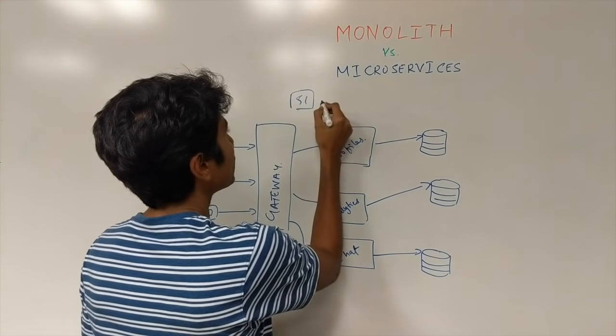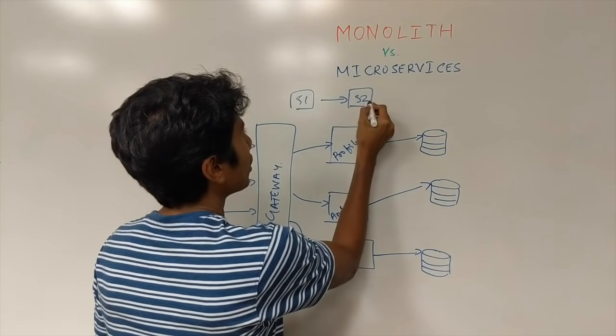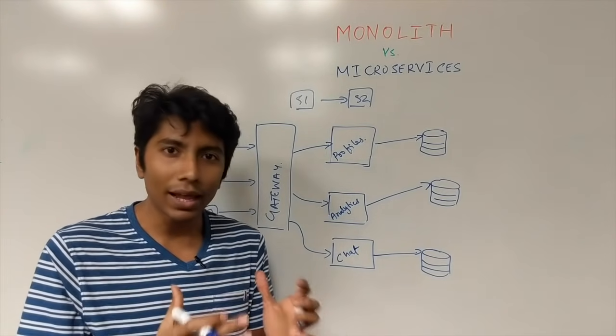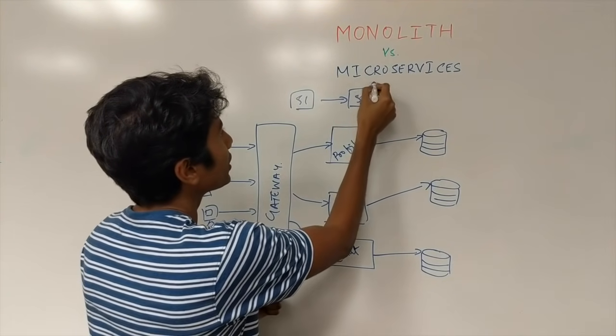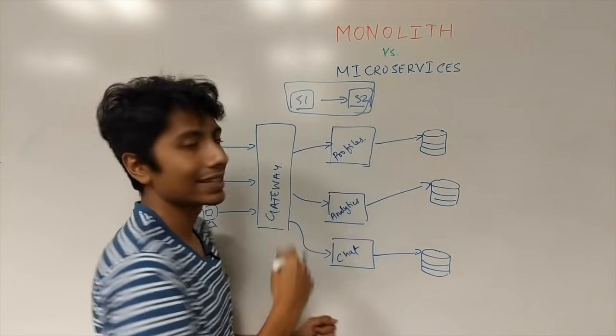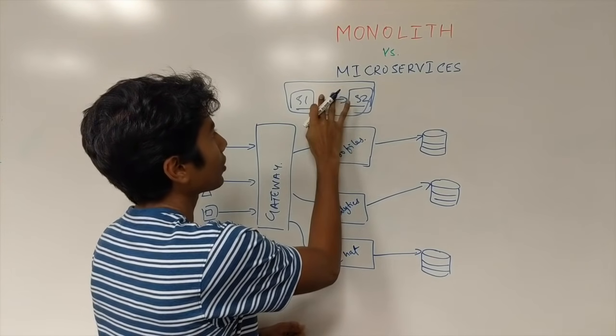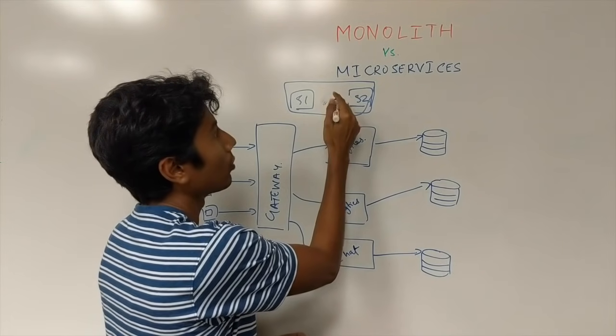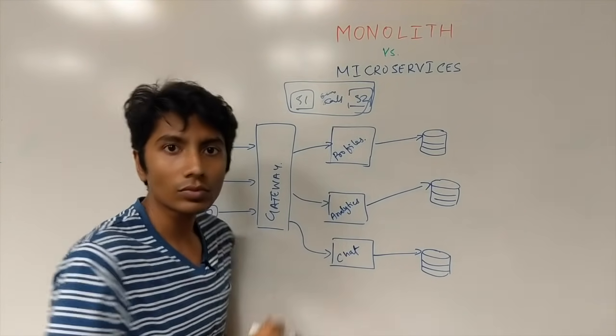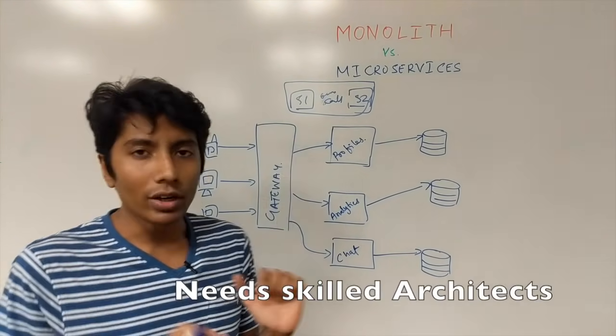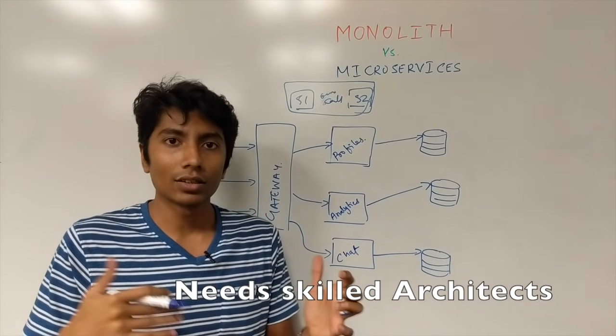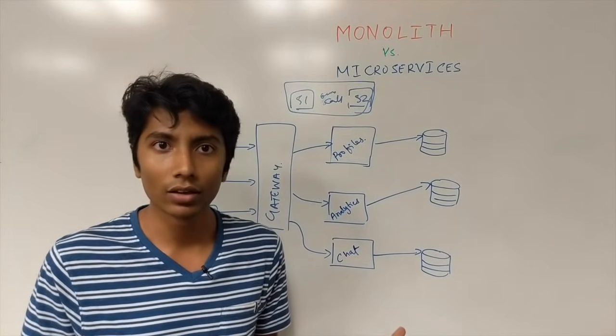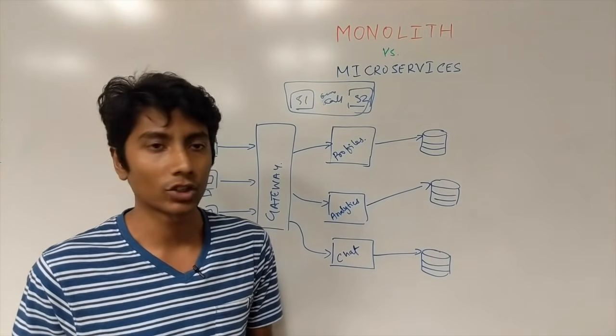So if service one is just talking to service two all the time, that implies that maybe it should have been within a single service and they could have converted this RPC to a normal call, a function call. That's the only disadvantage, it needs a smart architect to architect well for a microservice architecture.